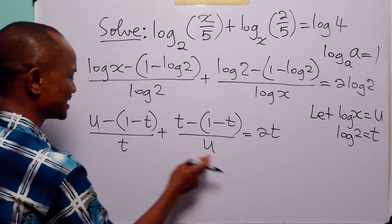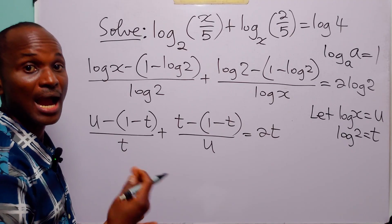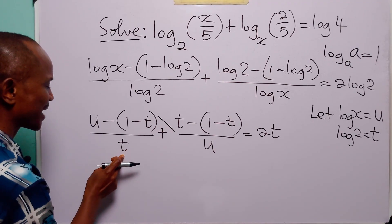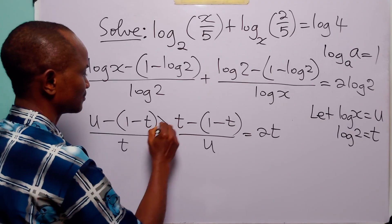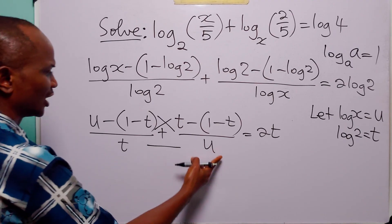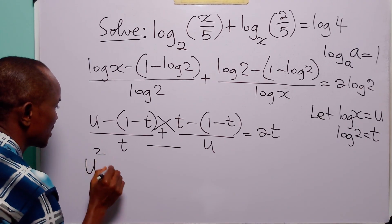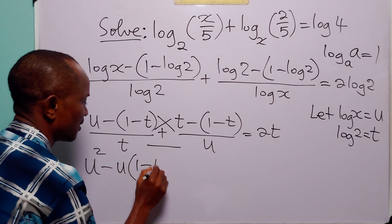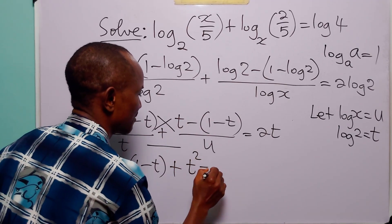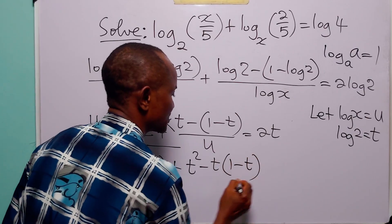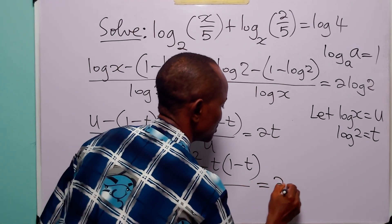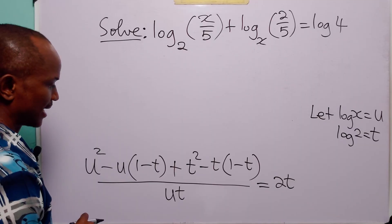The next step is to combine these two fractions into a single unit. We multiply the first numerator by the second denominator, and the second numerator by the first denominator, giving a combined denominator of ut. The combined numerator is u(u minus 1 minus t) plus t(t minus 1 minus t), which expands to (u² minus u(1 minus t)) plus (t² minus t(1 minus t)), all over ut, equals 2t.